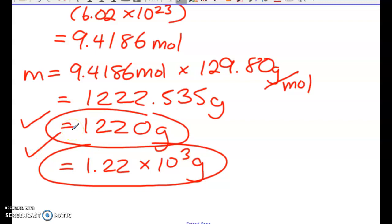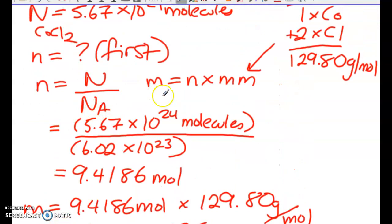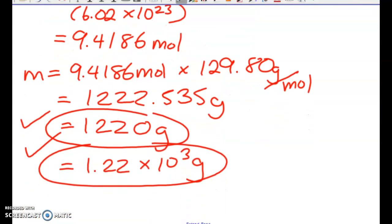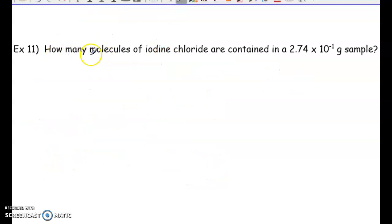Okay, so really we're not learning anything new in this last part. We're just combining the two different types of formulas that we learned. And then, of course, you always have to solve for moles first before you can shift to the second formula. So give this next one a try. How many molecules of iodine chloride, so iodine chloride is just one iodine and one chlorine, are contained in 2.74 times 10 to the negative 1 grams of a sample. So give this a try.